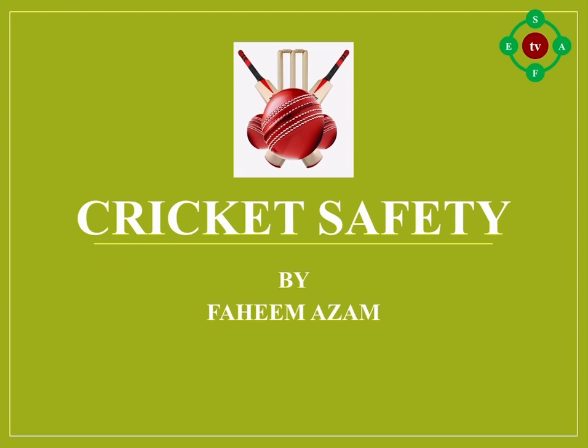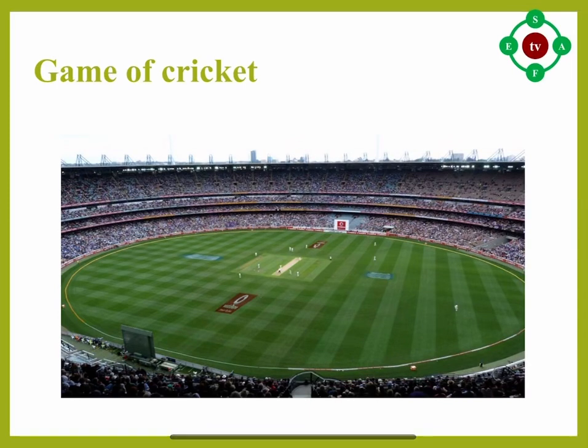Cricket is a bat and ball game played between two teams of 11 players on a field, at the center of which is a 22-yard pitch with a wicket at each end, each comprising two bails balanced on three stumps. The batting side scores runs by striking the ball bowled at one of the wickets with the bat and then running between the wickets, while the bowling and fielding side tries to prevent this by keeping the ball in the field and getting it to either wicket to dismiss each batter.